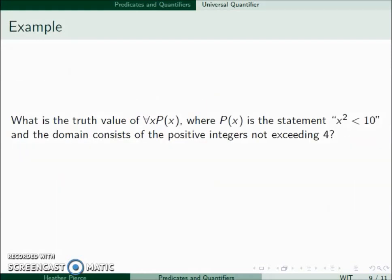For example, what's the truth value of ∀x P(x) where P(x) is the statement x² < 10 and the domain consists of the positive integers not exceeding 4? Well, this is false. 4 is in the domain and 4² is not less than 10.